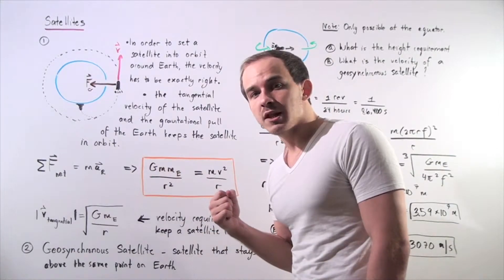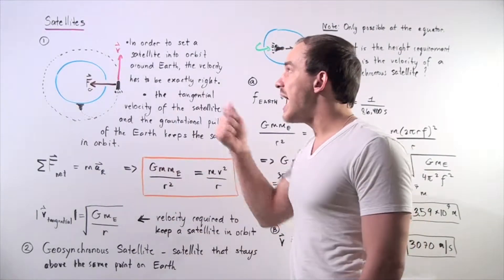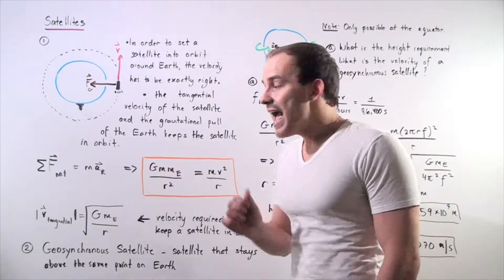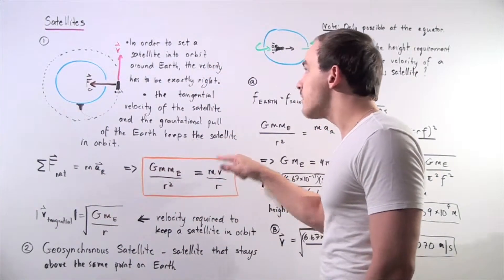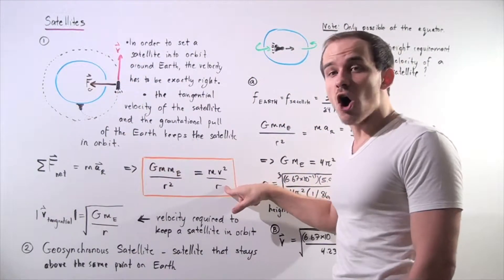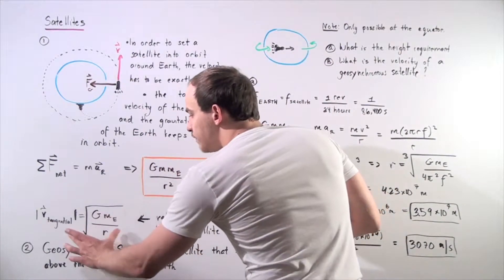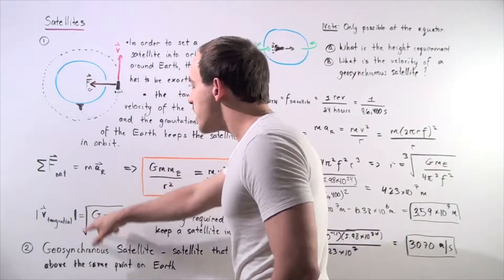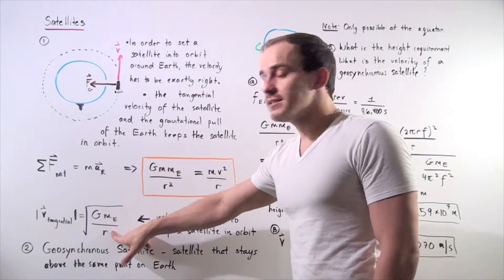The gravitational force is given by G times the mass of the satellite times the mass of the Earth, divided by the distance R squared. This equals M times the tangential velocity squared divided by R. Rearranging and solving for V, our tangential velocity equals the square root of G times the mass of the Earth divided by R.